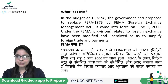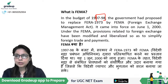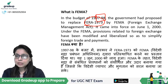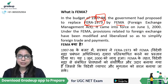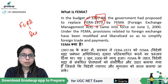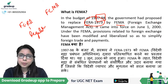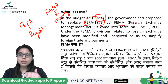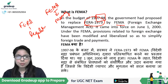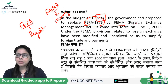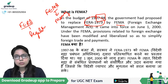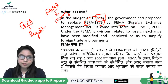In the budget of 1997 and 1998, the government proposed that the FERA act passed in 1973 be replaced by FEMA — Foreign Exchange Management Act. While FERA talked about regulation, FEMA talks about management — how to manage foreign exchange and proper planning. FEMA is a modified, liberalized version of FERA, as FERA had too many restrictions and rules to follow.